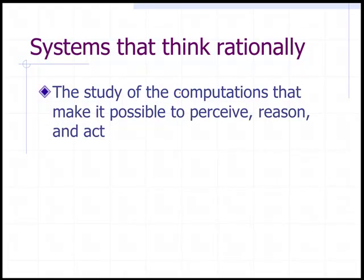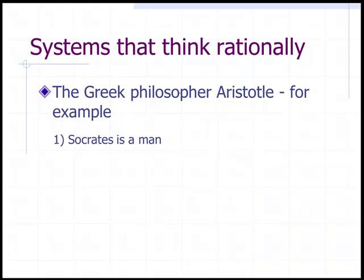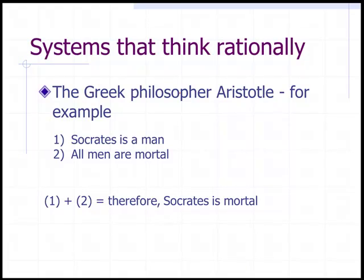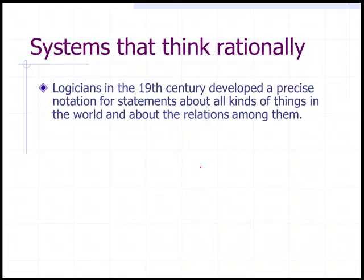Systems that think rationally: the study of the computations that make it possible to perceive, reason, and act. The Greek philosopher Aristotle was one of the first to attempt to codify right thinking into a reasoning process known as the laws of thought. By combining premise one and premise two, we get a logical conclusion — this is the whole concept of thinking rationally. These laws of thought were supposed to govern the operation of the mind, and their study initiated the field called logic. Logicians in the 19th century developed a precise notation for statements about all kinds of things in the world and about the relationships among them.